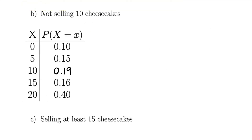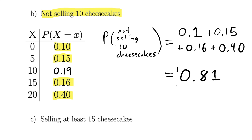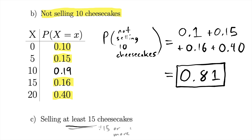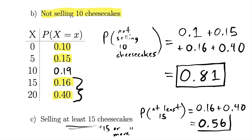In part b, we want the probability of not selling 10 cheesecakes — that's actually the sum of all the other probabilities: 0 or 5 or 15 or 20. It's 0.81. In part c, selling at least 15 cheesecakes means 15 or more, which includes 15 or 20. The probability is the sum of those two: the probability of selling 15 plus the probability of selling 20. There's a 56% chance of selling at least 15 cheesecakes.